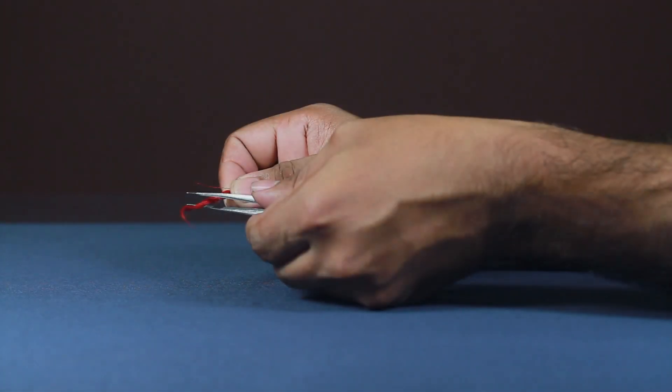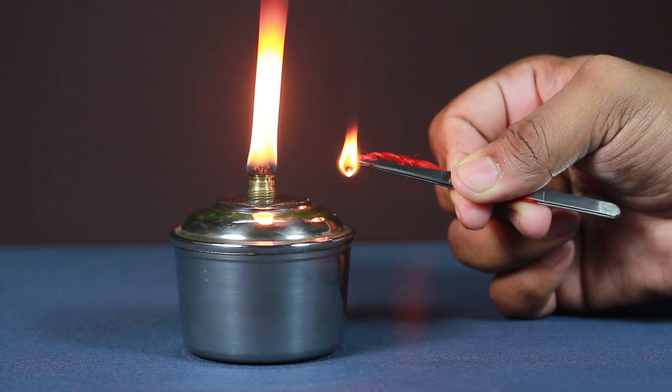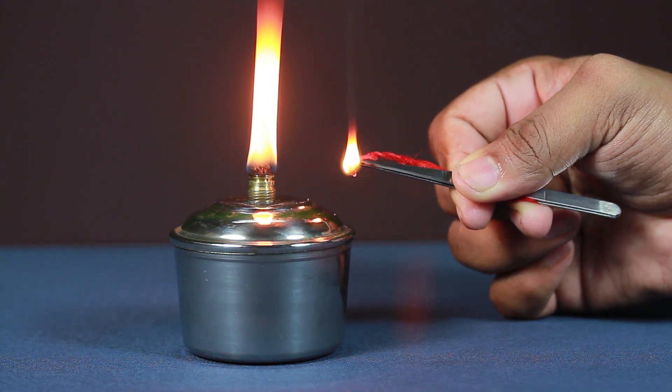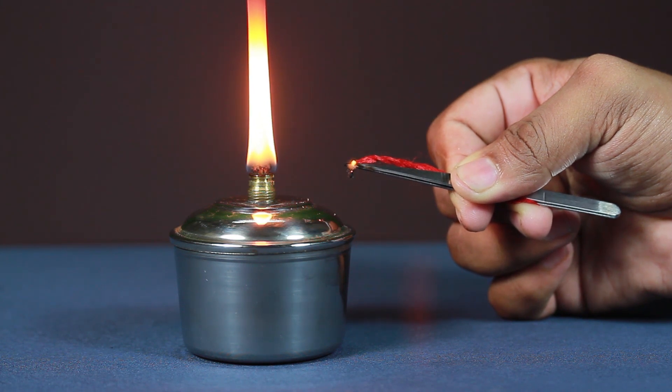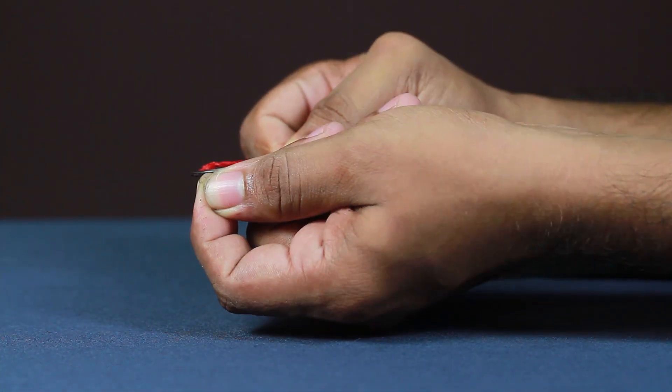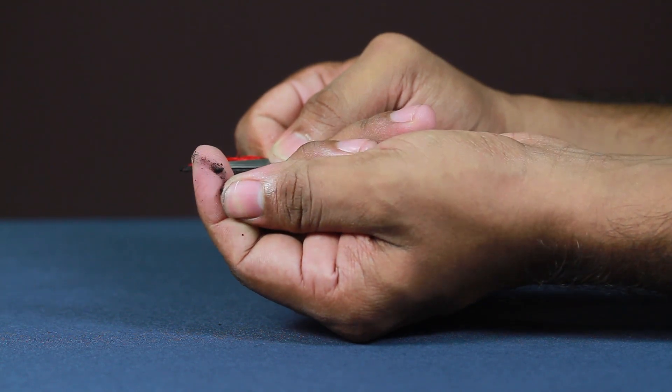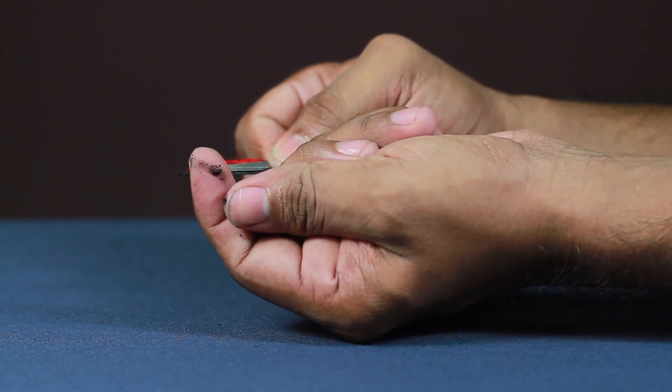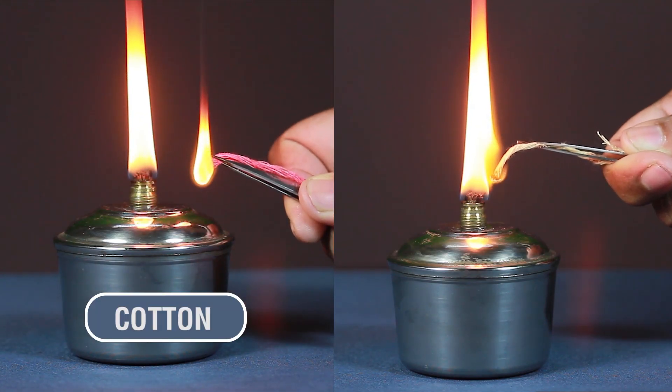Take another fiber, say nylon, and burn it in flame. Observe that they melt. Repeat the above steps for other threads and note your observations. Cotton, wool.